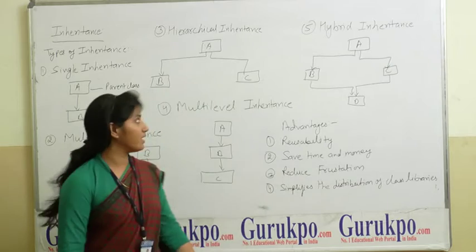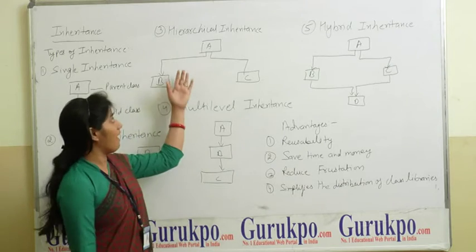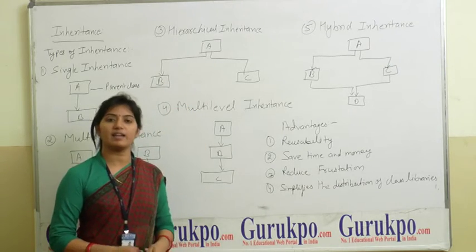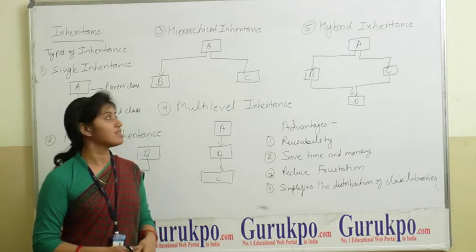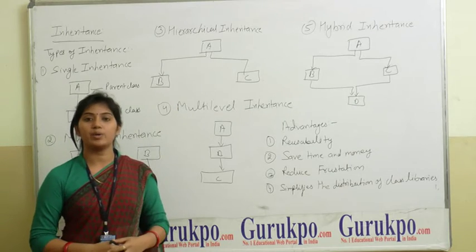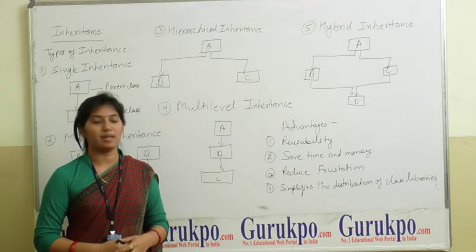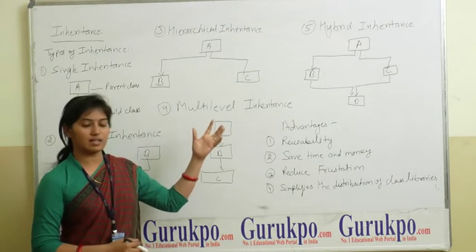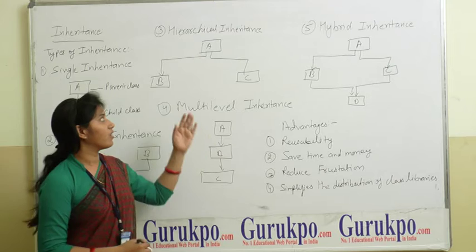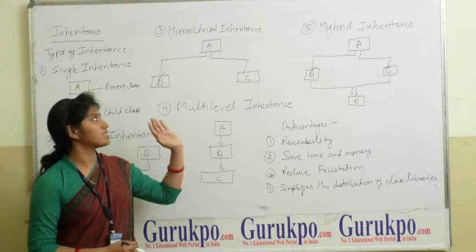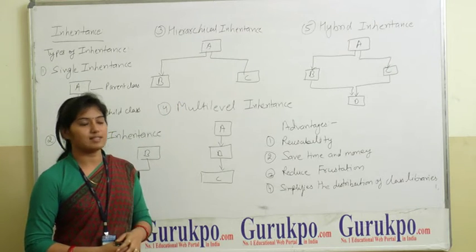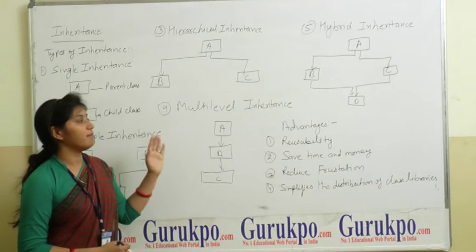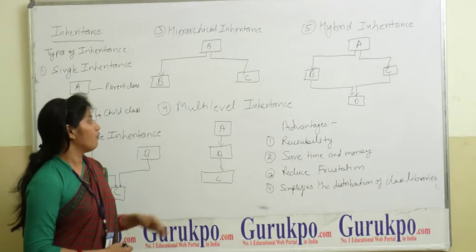The third type of inheritance is hierarchical inheritance. In hierarchical inheritance, one class is acquired by two classes. That means B and C, which are the classes, acquire the properties of class A. That means A is inherited by both class B and class C.